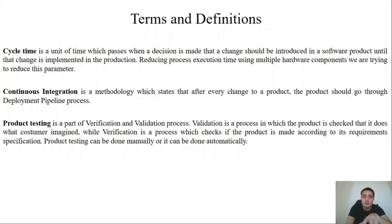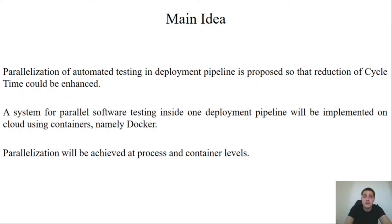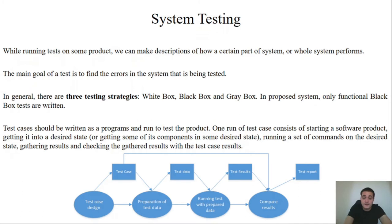Product testing is a part of a verification and validation process. We will discuss furtherly those mentioned terms. The main idea is the parallelization of automated testing in the Deployment Pipeline in order to reduce the cycle time. We propose the system which has two parallelization techniques. First is parallelization with processes and second is parallelization at container levels. The system will be implemented on cloud and the docker containers will be used.